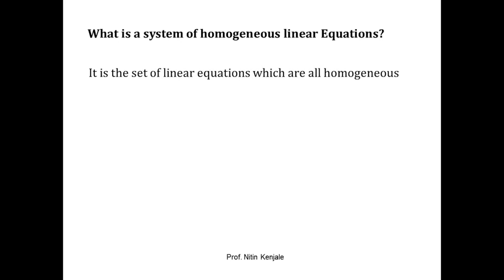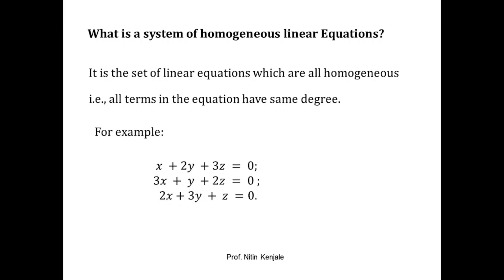A system of homogeneous linear equations is the set of linear equations which are all homogeneous in nature. Homogeneous means the degrees of every term are the same — in this case, degree has to be one. For example, consider a system of three equations in variables x, y, and z. The highest degree is one, and since the constant term is zero, this system is homogeneous. You can consider the zero term as zero times x, so the coefficient gives degree one.